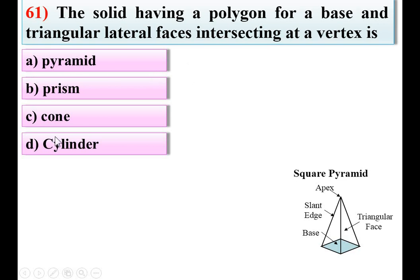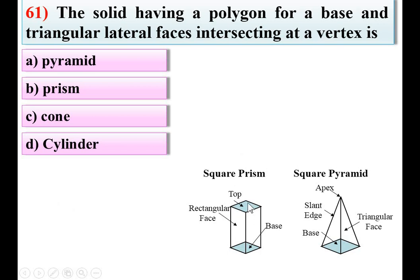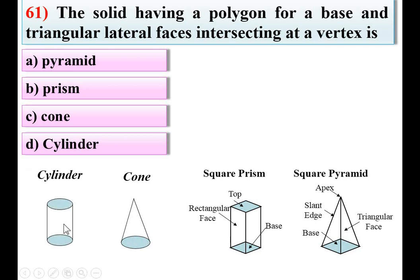Although we will check all options. Consider option B, prism: a prism has top and bottom both as polygons, but has rectangular lateral faces. In our description it should be triangular lateral faces, so B is not possible. For option C, cone: a cone has no lateral faces. In a cylinder also there are no lateral faces. Looking at all four options, only the pyramid has triangular lateral faces, so A is the correct answer.